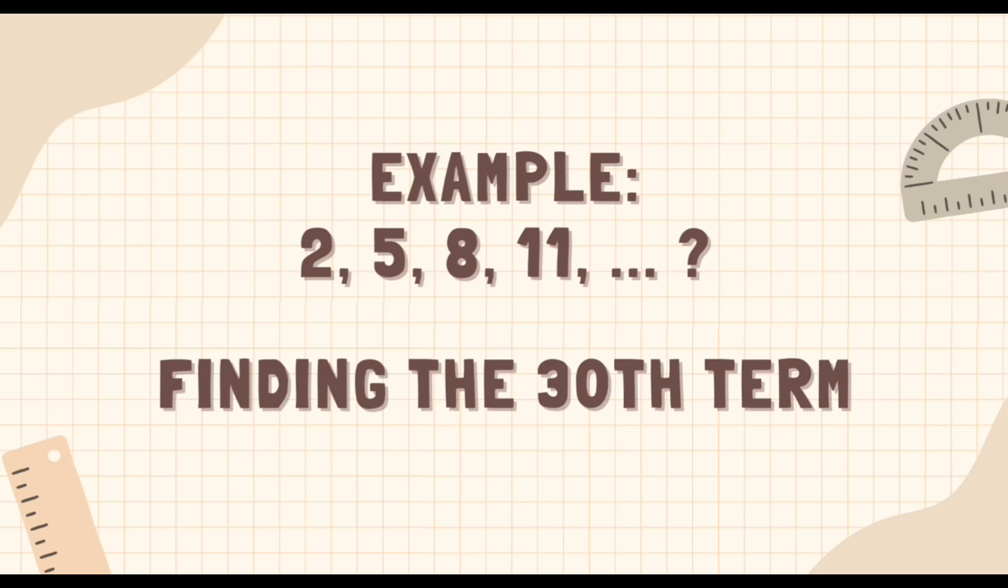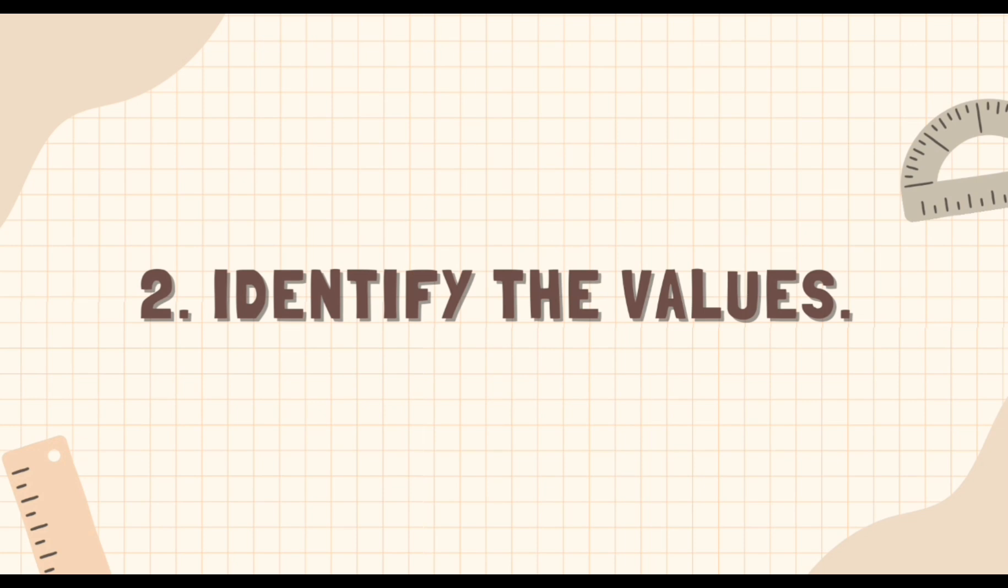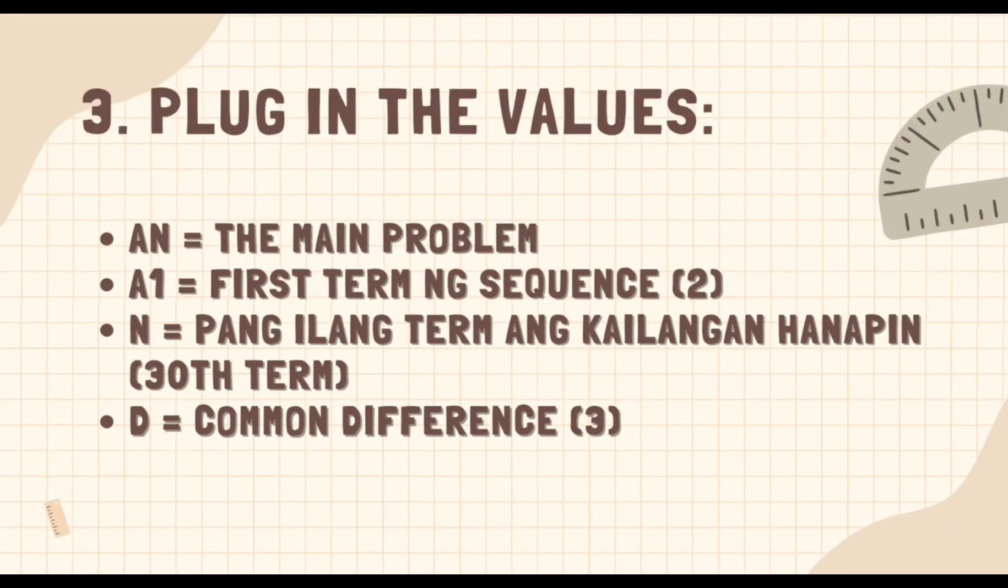Gamitin natin ang example dito. Find the 30th term of this arithmetic sequence: 2, 5, 8, 11. Second is identify the values. You need to know the values of a sub 1, n, and d to use the formula. These values should be given in the problem or you should be able to calculate them.